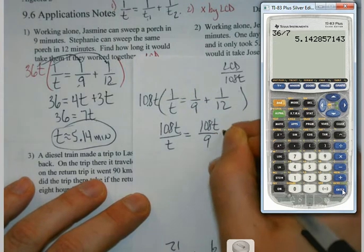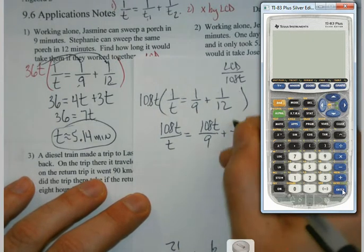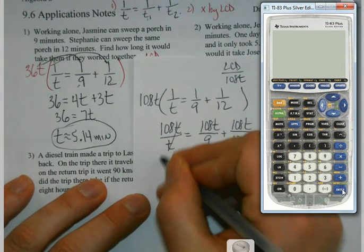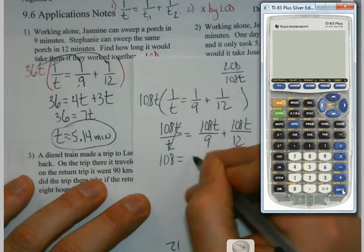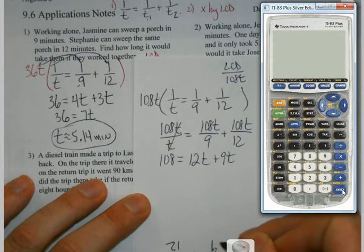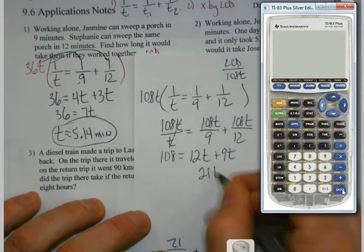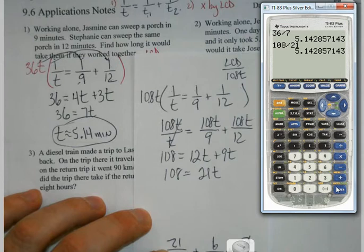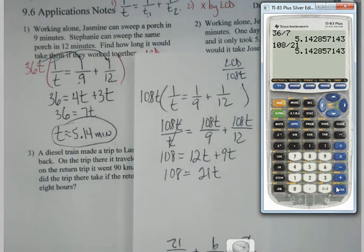Now, if some of you are comfortable with your LCDs and you're finding the smallest ones right away, shoot, keep doing it that way. It's going to make life simple. But you'll notice the setup ends up looking very similar to what it did on the last one. But bottom line is, let's see if the answer comes out the same. 12t + 9t = 108t. 21t = 108. t = 36/7. Yeah.